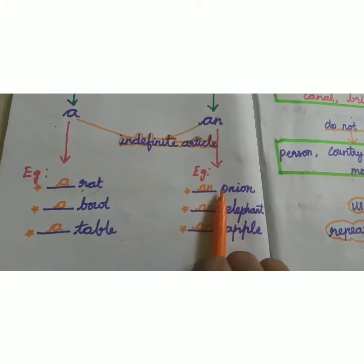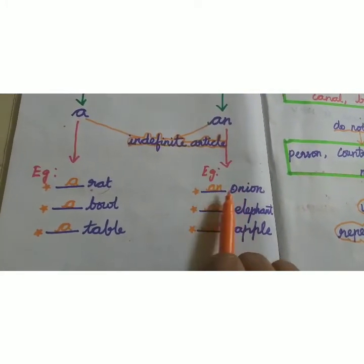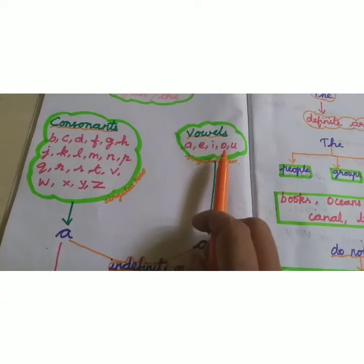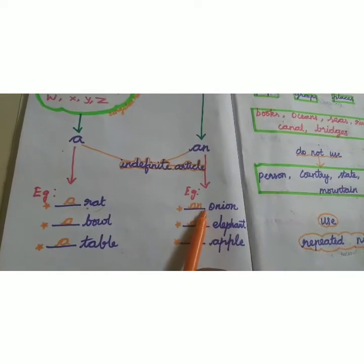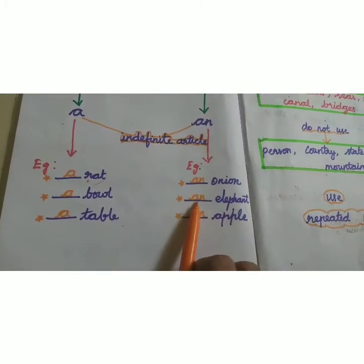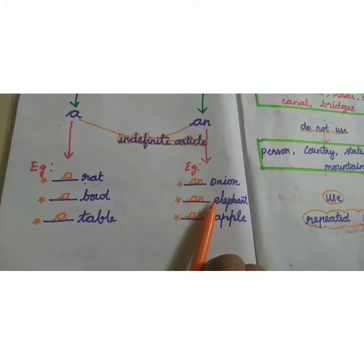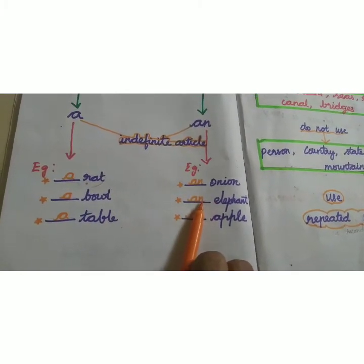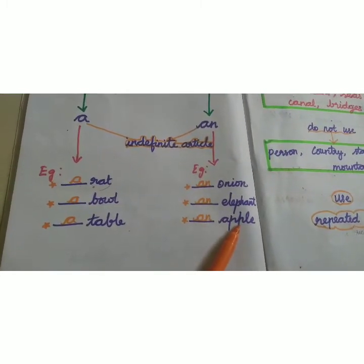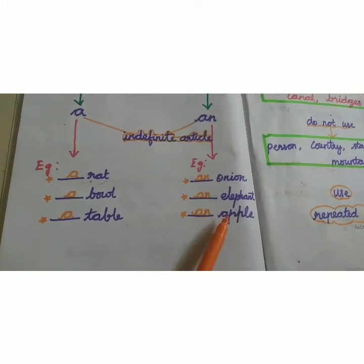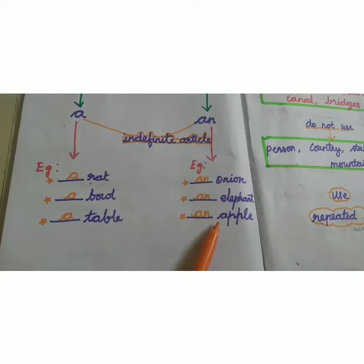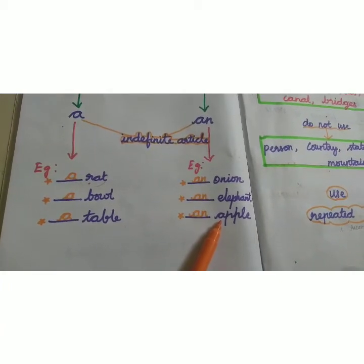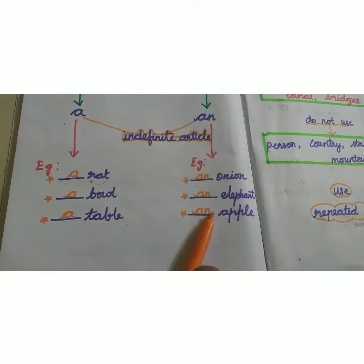Blank — onion. The first letter is O. O is in the vowels — yes, A, E, I, O, U — so we should write AN. And blank — elephant. The first letter is E. E is in the vowels, so you should write AN. And blank — apple. The first letter is A. Is A a vowel? Yes, A is a vowel. So you should write AN.